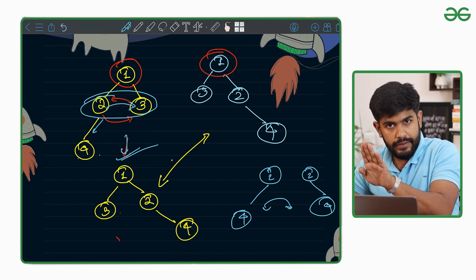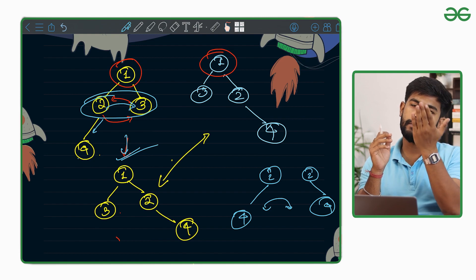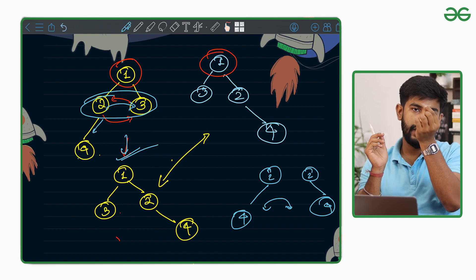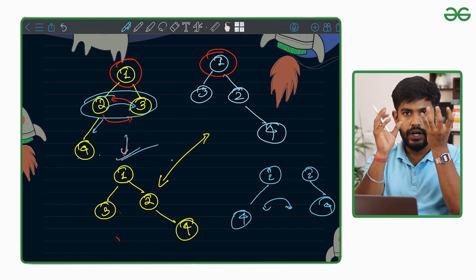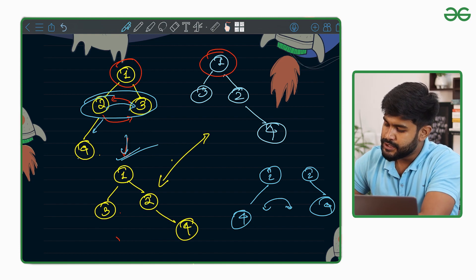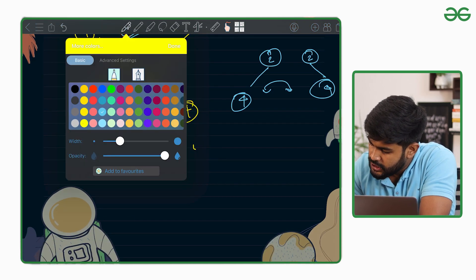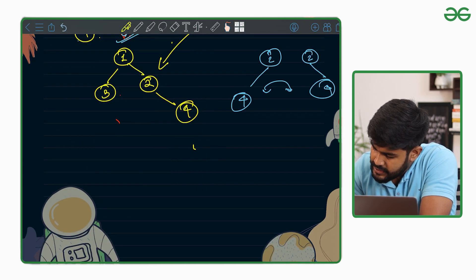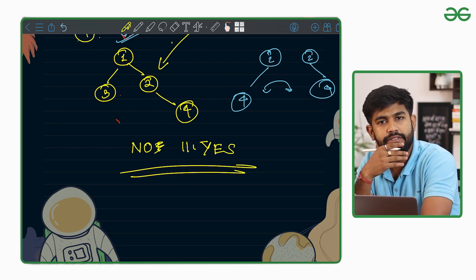We need to flip the subtrees. If the two values don't match, we flip; if they match, we go down. Our objective is simply to know if it is possible or not — just yes or no.